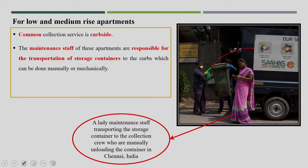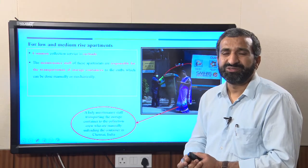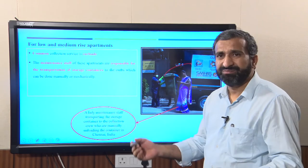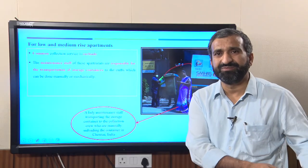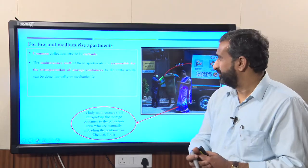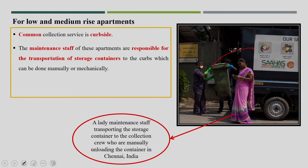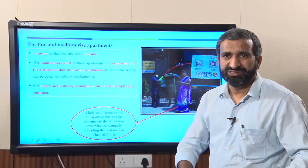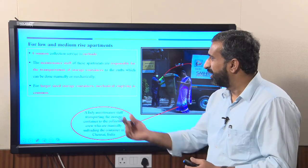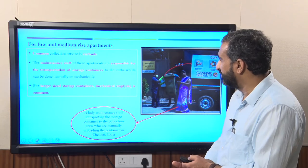India is also seeing many more apartments coming up. These apartments need some kind of maintenance staff — maybe the security themselves — who can help collect the waste from the apartment area and transport it to the collection vehicle. For large-size storage containers, mechanical emptying is very common in apartments, because apartments have many households together and waste generation will be large. It is good to have larger-size containers used in this scheme, and mechanical unloading of containers is possible.